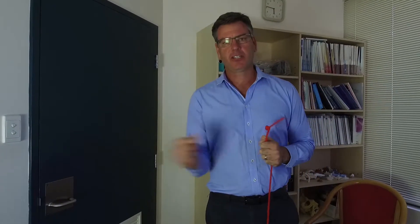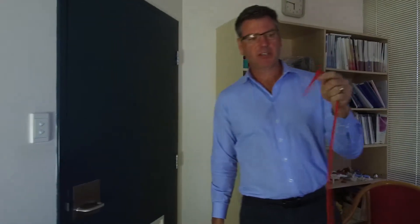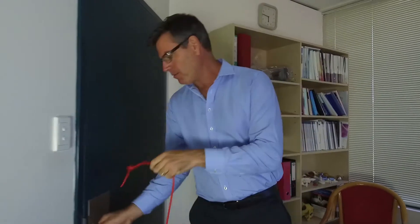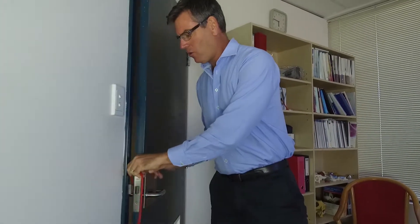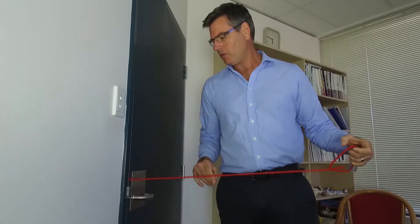The exercise is internal rotation strengthening to strengthen up the tendon in the front, the subscapularis. Using an exercise cord with a knot in it, I'd encourage you to place that in the door, close the door, just make sure it's nice and secure, and no one's going to open the door.